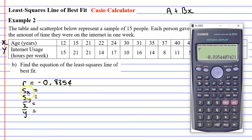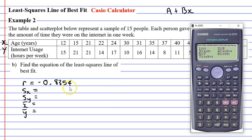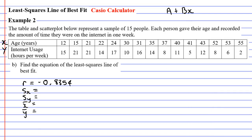We'll start with Sx, which is the standard deviation of x. To get that we go into stat mode again: shift 1, then number 5 for var. Some calculators have Sx labeled directly; this one doesn't, but Sx is equivalent to x sigma n minus 1. Clicking number 4 then equals gives us 13.5882. That's our first value: 13.5882.